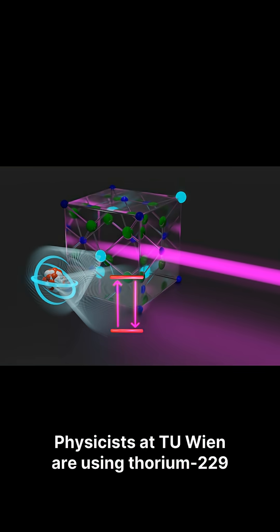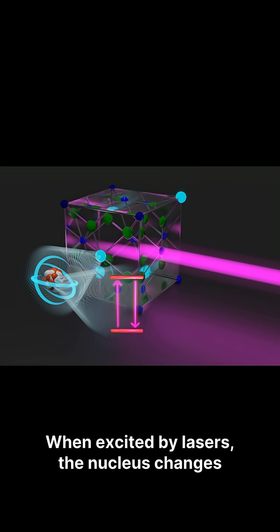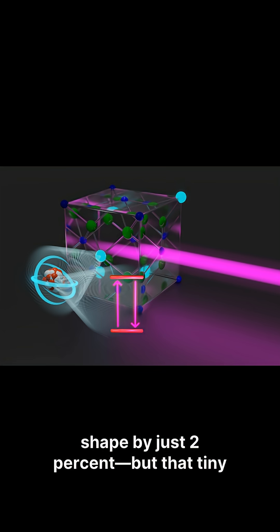Physicists at Tuveen are using thorium-229 nuclei as cosmic detectors. When excited by lasers, the nucleus changes shape by just 2%, but that tiny shift amplifies sensitivity to alpha by a factor of 6,000.